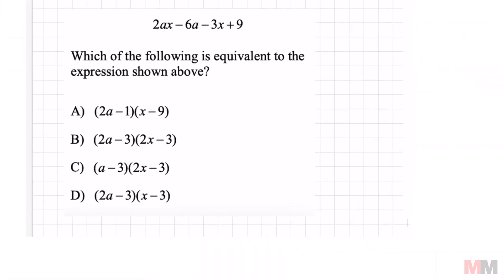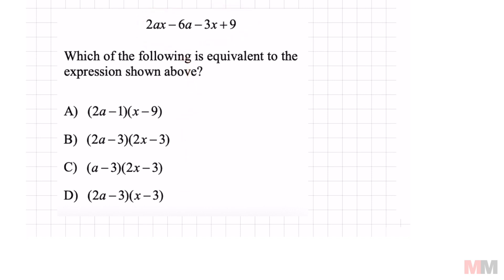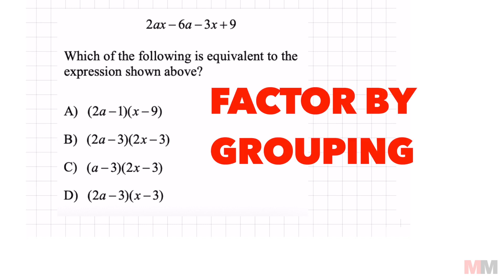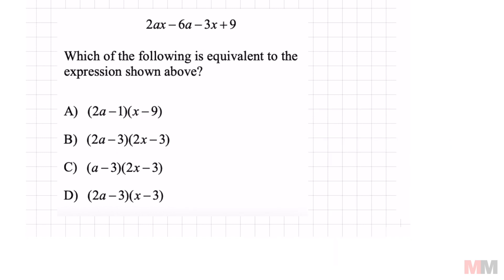Start off with this first question: which of the following is equivalent to the expression above? We're trying to match one of these answer choices with the expression on top. Anytime I see four terms, I almost always think of factor by grouping. Distributing each one of these binomials would take way too long — if you know factor by grouping, this is going to take you maybe 30 seconds.